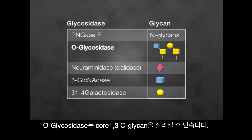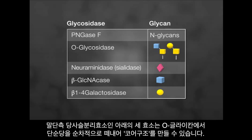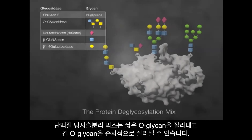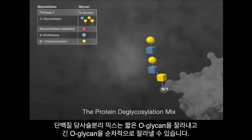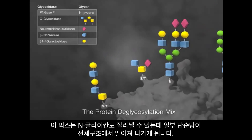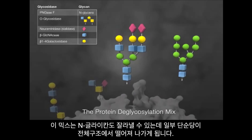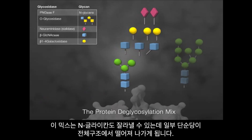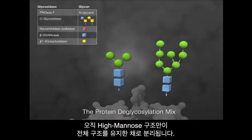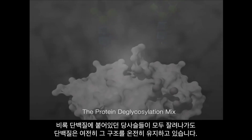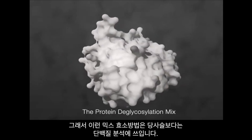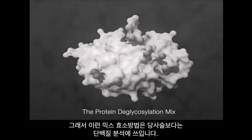O-glycosidase removes core-1 and core-3 O-glycans. The exoglycosidases sialidase, beta-GlcNAcase, and beta-1,4-galactosidase can be used to trim down O-glycans to their core structures. The protein deglycosylation mix can remove short O-glycans and longer-chain O-glycans in a step-by-step reaction. The mix also removes N-glycans; however, the complex N-glycans are degraded by some of the enzymes. Only high-mannose N-glycans remain as a block. Although some glycans are reduced to individual components and are not suitable for analysis, the protein remains intact. This is the method of choice if one wants to study the properties of the naked polypeptide.